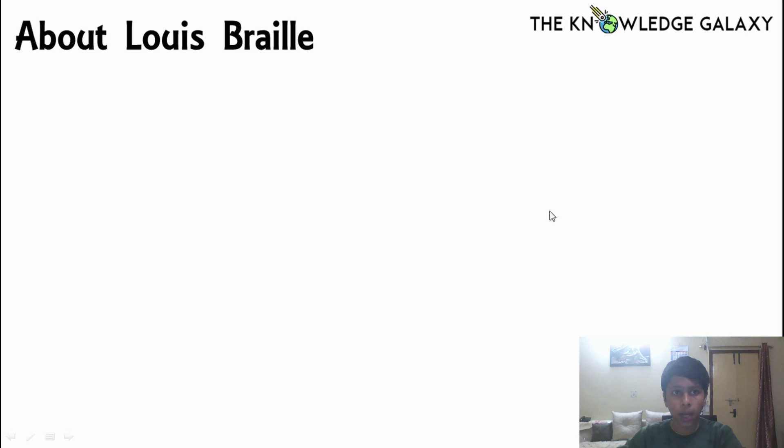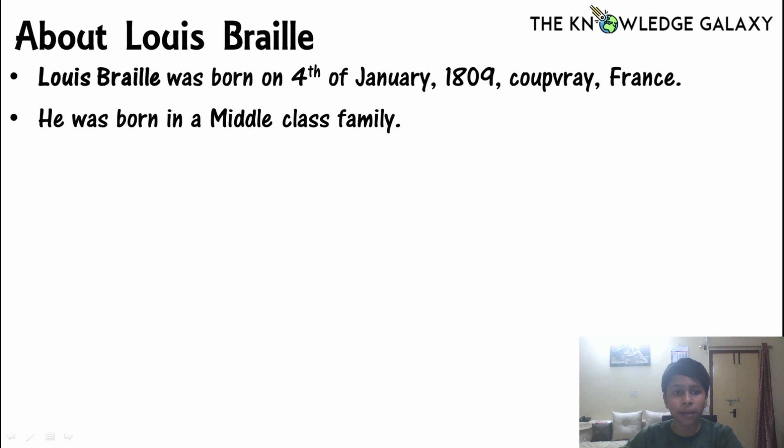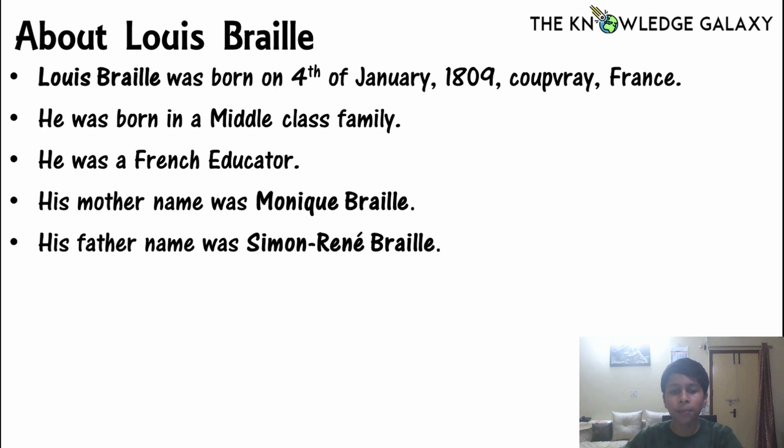Louis Braille was born on the 4th of January 1809 in Coupvray, France. He was born in a middle class family. He was a French educator. His mother's name was Monique Braille and his father's name was Simon-René Braille.